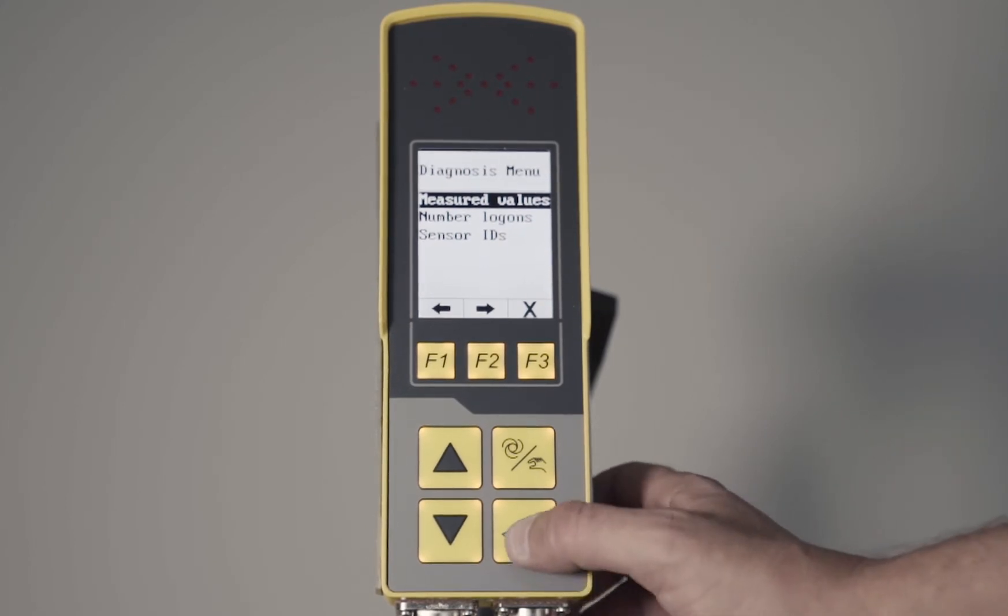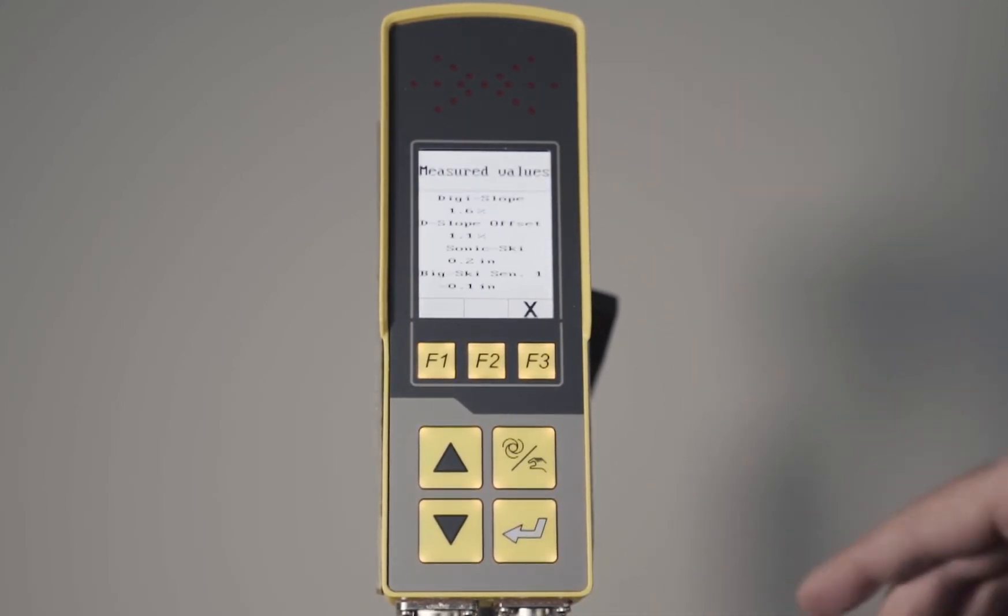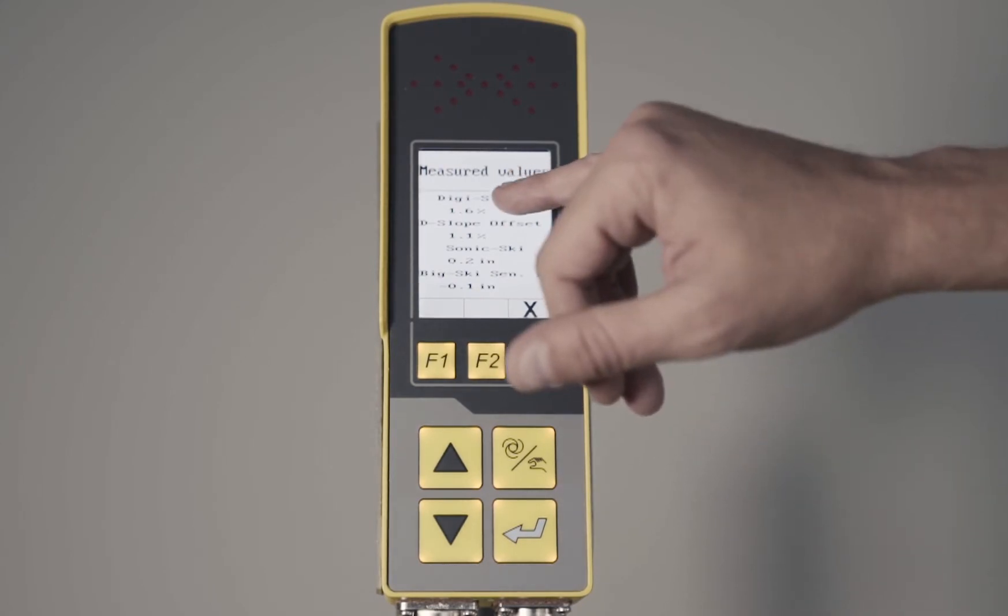Diagnostic menu, measured values. This shows you what's hooked up to your CAN bus network on here and gives you the measured value of it.